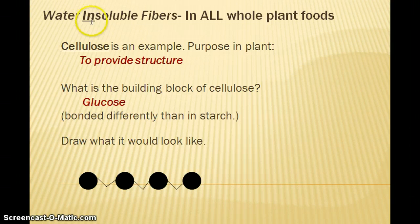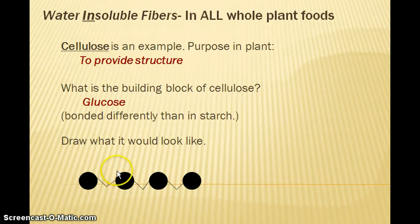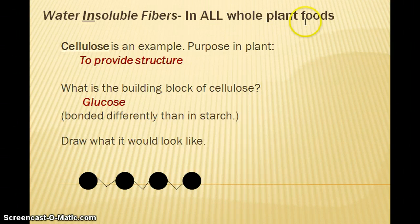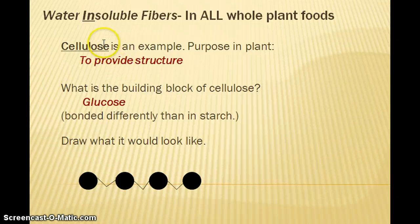First, let's look at the insoluble fibers. One example is cellulose. There are other types of insoluble fibers as well, like hemicellulose, which is a more branched fiber and actually a little bit more soluble in water compared to cellulose. The purpose of insoluble fibers is to provide structure to plants — to the stems and seeds. You will find all types of fibers in whole plant foods because they serve a purpose for the plant. The building block is primarily glucose, although other sugars can appear in different insoluble fibers.